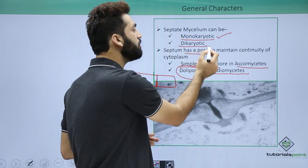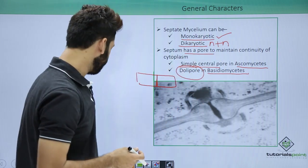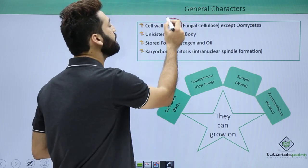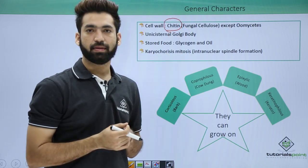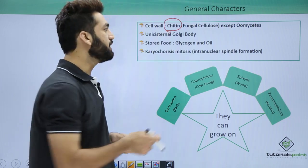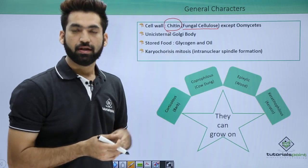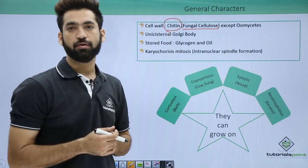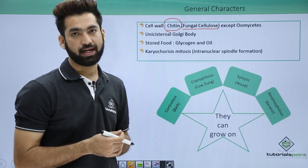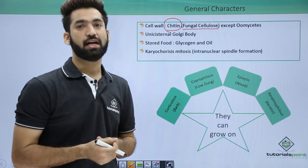The fungal cell wall is very important. It is made up of chitin, which is also called fungal cellulose. Remember, chitin is not cellulose — chitin is a polysaccharide of N-acetylglucosamine. The bacterial cell wall was made up of peptidoglycans, but the fungal cell wall is made of chitin.